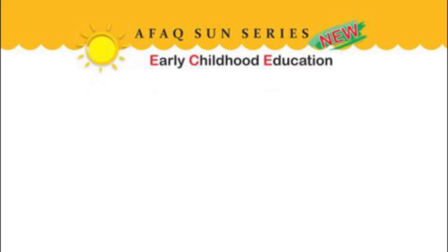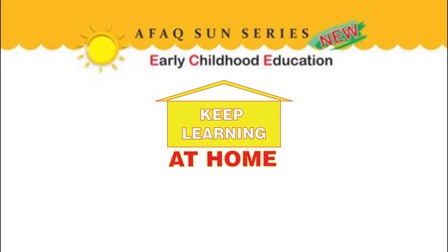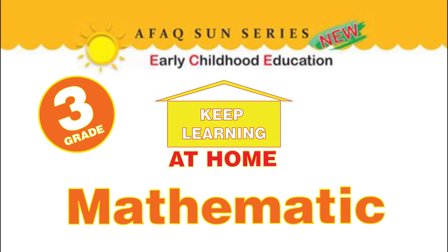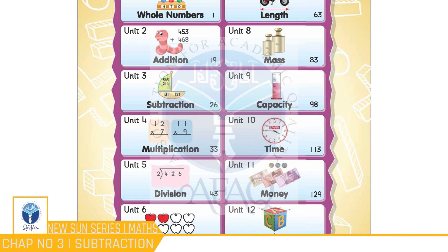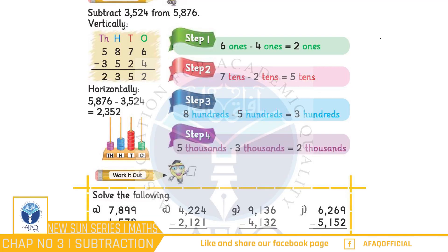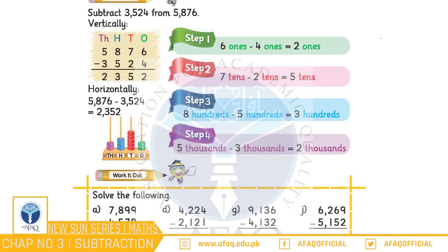Bismillahirrahmanirrahim. Aafak News and Series - Keep Learning at Home. Mathematics Grade 3, Chapter 3: Subtractions. Bacchiyon, is chapter mein hum 4-digit numbers ko 4-digit numbers mein se borrow karte hue aur bagair borrow karte hue subtract karna seekhenge. To chaliye, sabse pehle hum page 27 par 4-digit numbers ko 4-digit numbers mein se bagair borrow karte hue subtract karna seekhte hain.